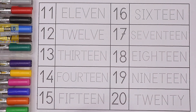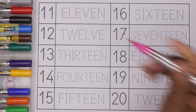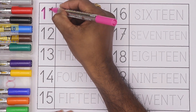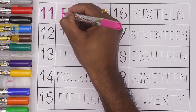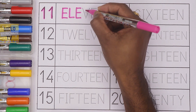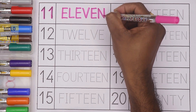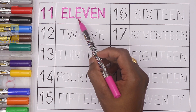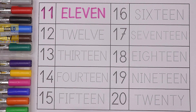Hello kids! Today in this video we will learn numbers and number names from 11 to 20. So let's get started. First I'll take pink color — this is pink color — to write number 11. 1, 1, 11. And the spelling is E L E V E N. 11, E L E V E N, 11.